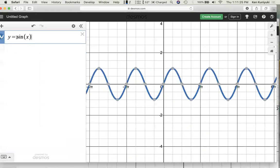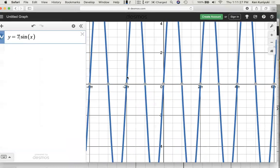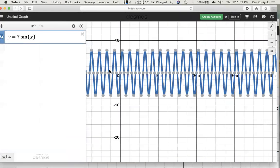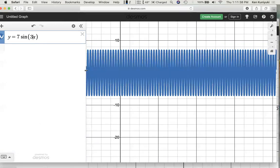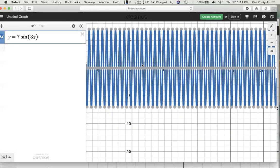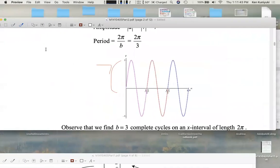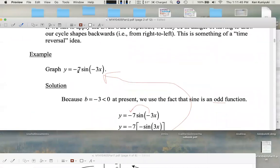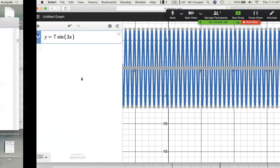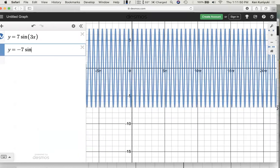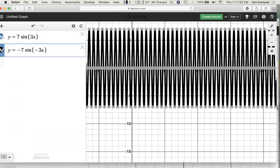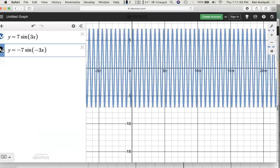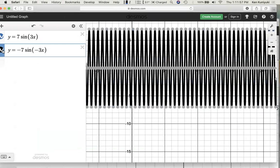Desmos confirms that. Here's y equals 7 sine of 3x. Very hyper. I'll zoom in. By the way, one way to verify equivalence, graph the original. We're just going to recolor the graph. It's the same graph. Y equals negative 7 sine of negative 3x. We're just recoloring the graph. It's the same graph. Equivalent equations, same graph.